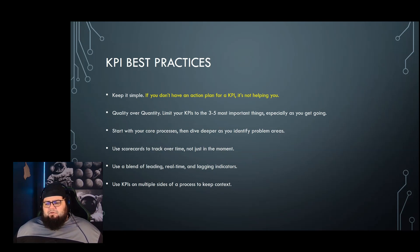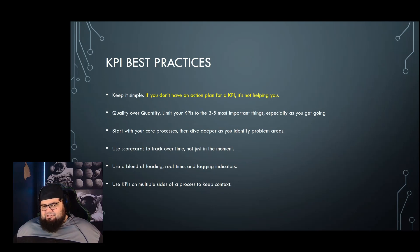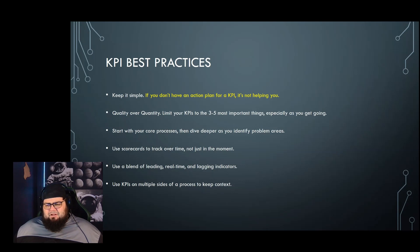Quality over quantity — you probably can't action more than three to five major movements in your team at a time. In any given quarter, pick three to five goals to focus on as an organization. Anything more and you run out of time to do your full-time job. Three to five KPIs aligned with a couple of really good goals is much better than twenty arbitrary KPIs just to fill up a dashboard.